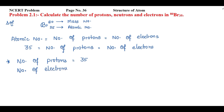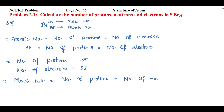Now let's see the mass number. The mass number represents the addition of the number of protons and the number of neutrons. So: number of protons plus number of neutrons equals mass number. The mass number is 80 and the number of protons is 35, so we need to find the number of neutrons.